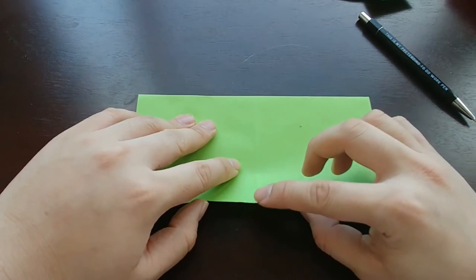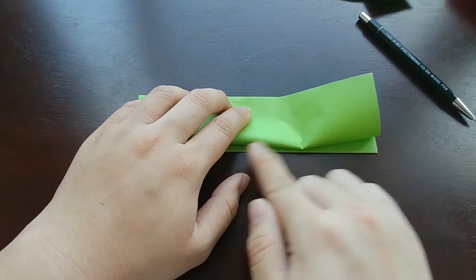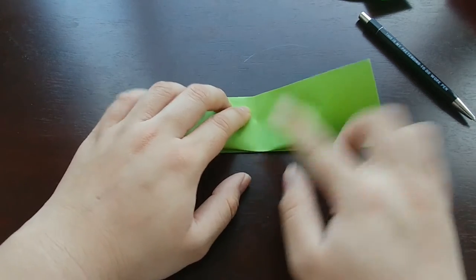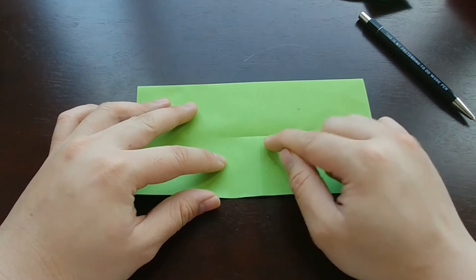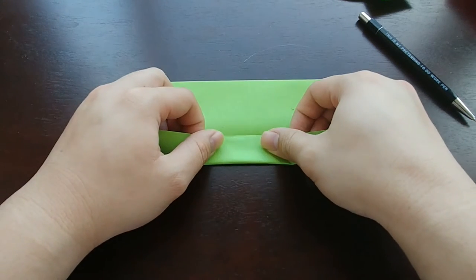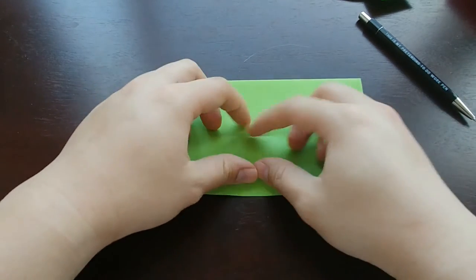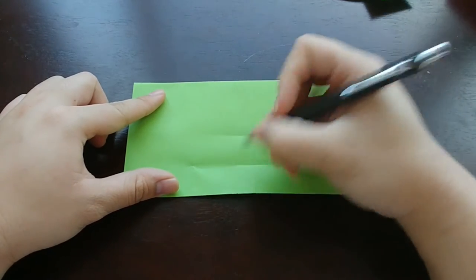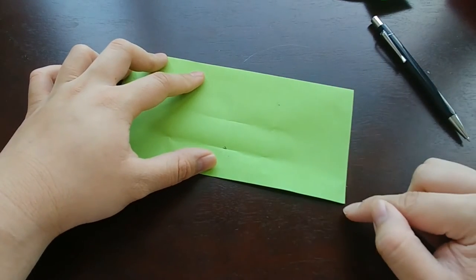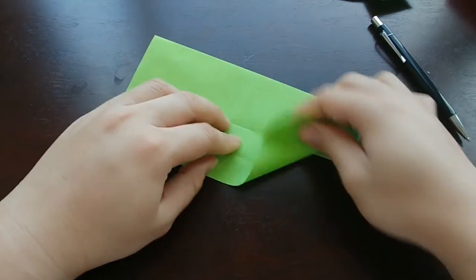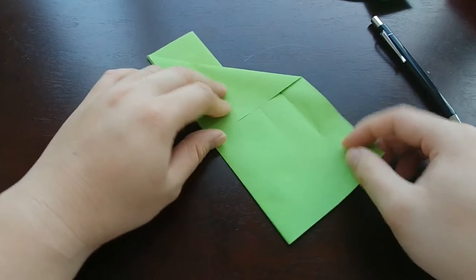So, first, we're going to fold this point. Essentially, edge to edge, but don't crease throughout. Just going to create a reference point right here. Next thing we're going to do is do the same thing, but to the point we just made. And pinch, but do not crease all the way. Just mark this here with my pen. So, from here, we're going to take this corner and fold it all the way to the middle. And do the same on the other side.